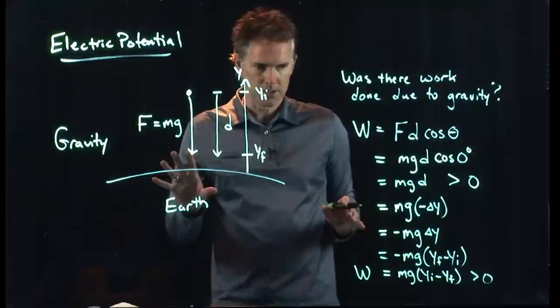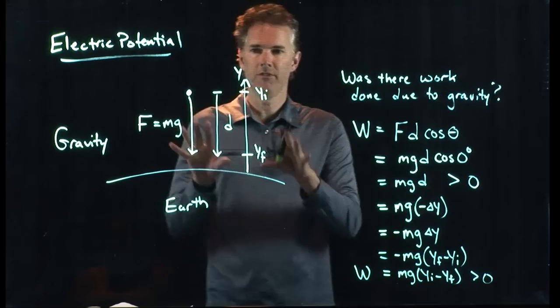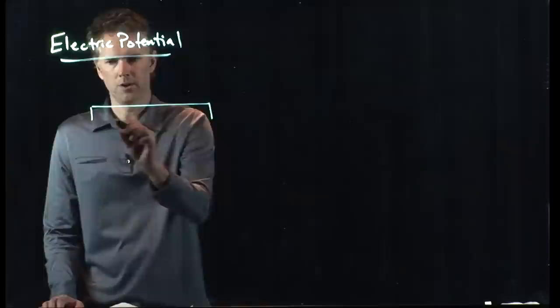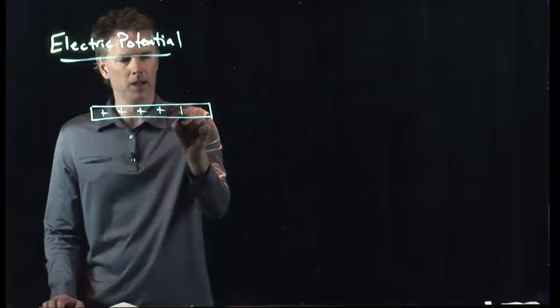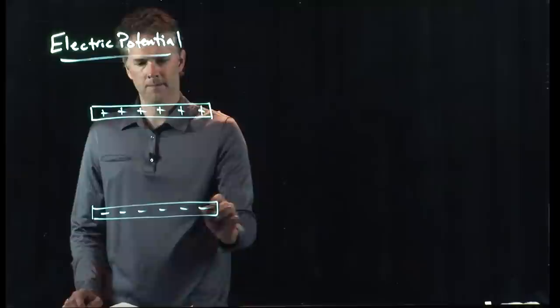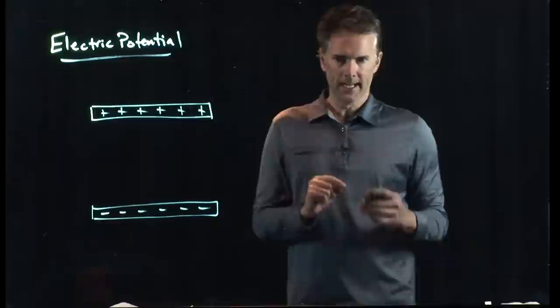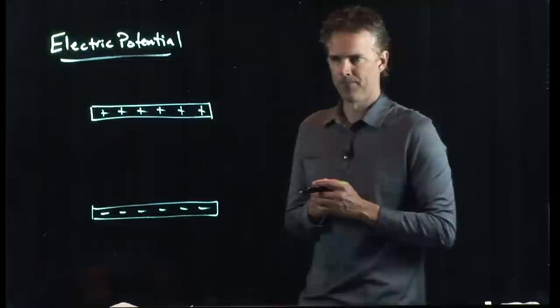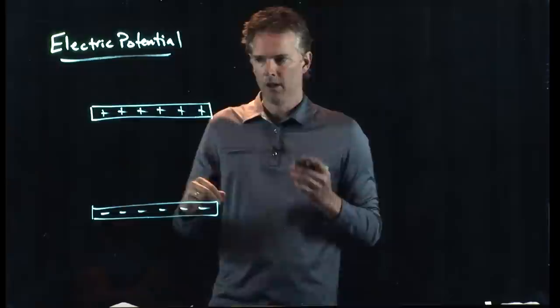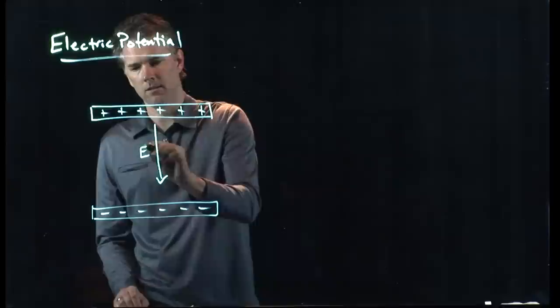Now let's do the analogy between this gravitational problem and an electric field problem. Say I have a whole bunch of charge sitting on a plate, and I take another plate and give it a whole bunch of negative charge. In the region in between those two, is there an electric field? Yes — because electric fields leave positive charges and end up on negative charges, so there has to be a field pointing in that direction.